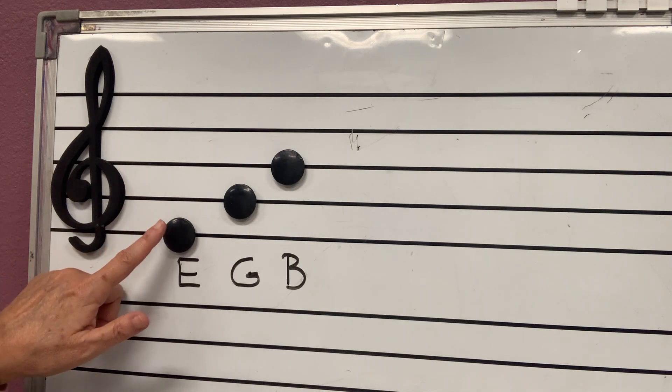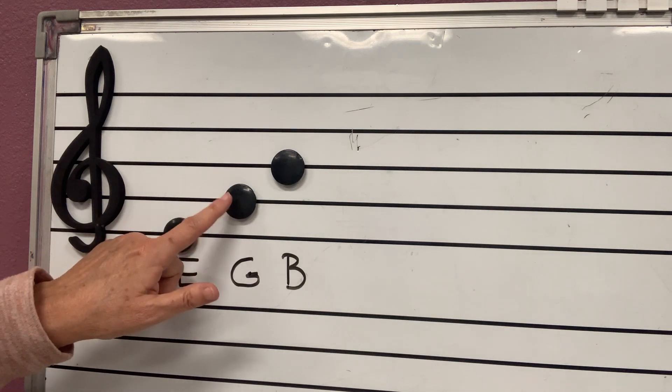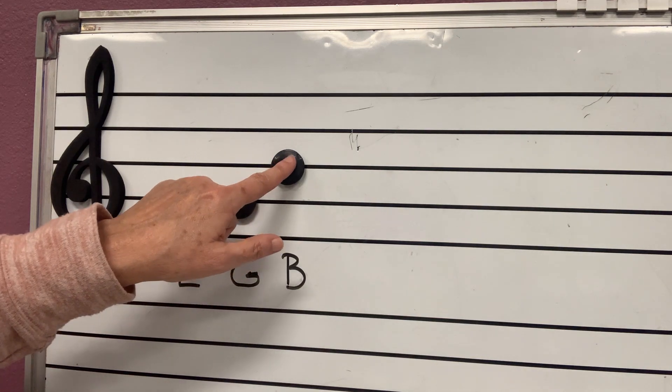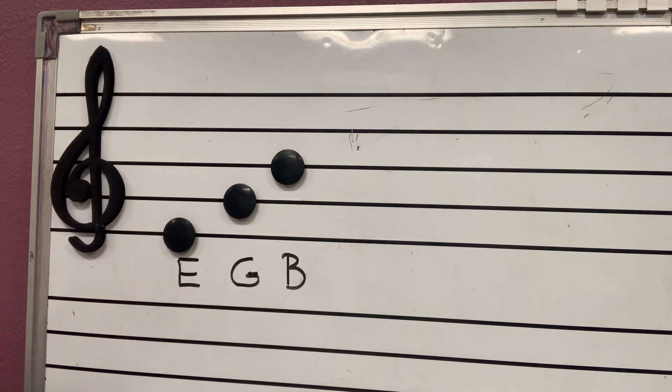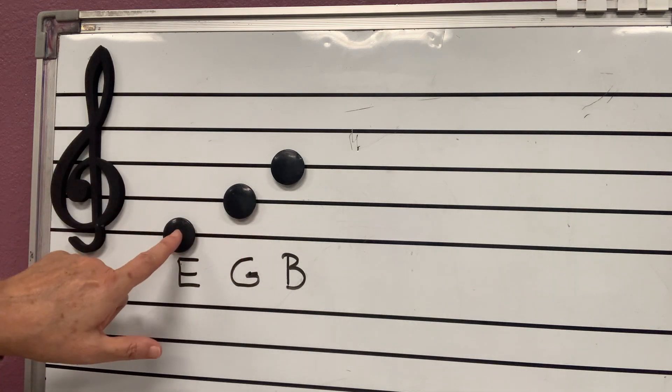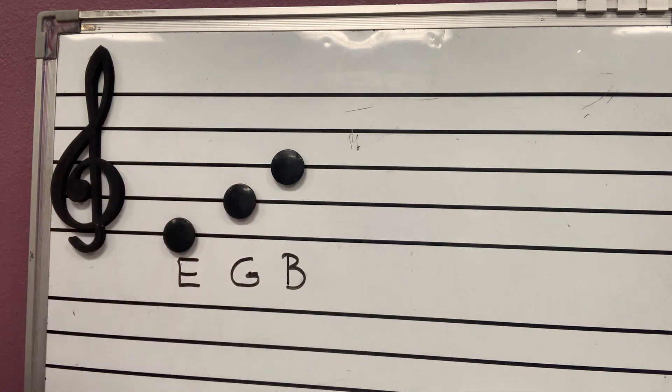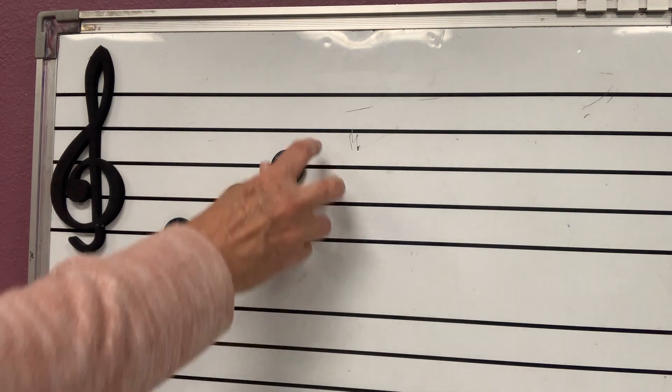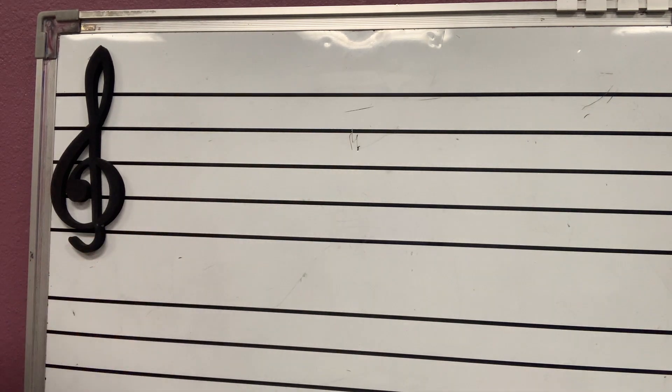We already knew that the first line is E. We already knew that the second line is G. All we have to remember is that the third line is B. And if we forget it, all we have to say is, Every girl bakes. So, I'm going to try to trick you. I'm going to put that note and you have to say it faster than me. Okay? You have to beat me.